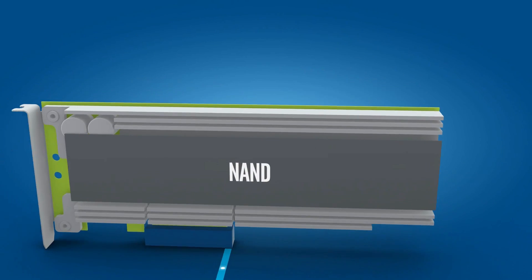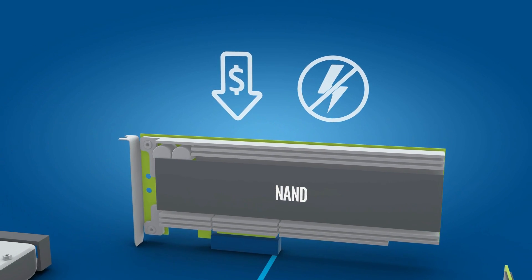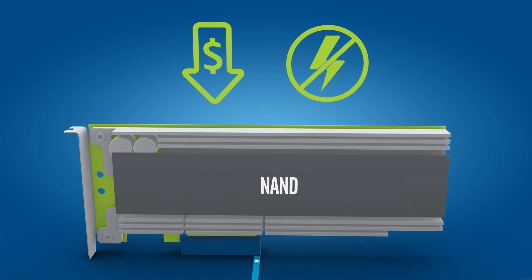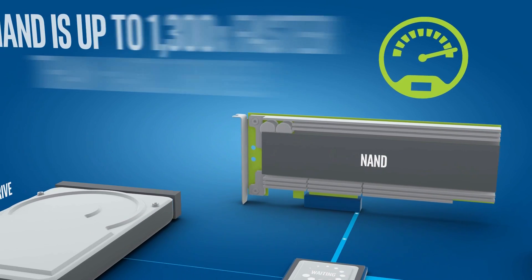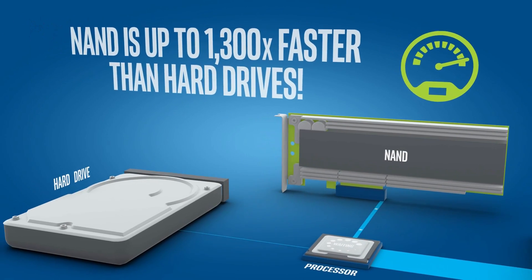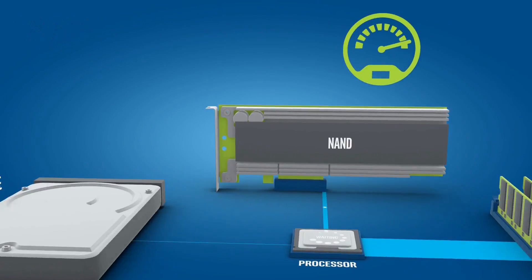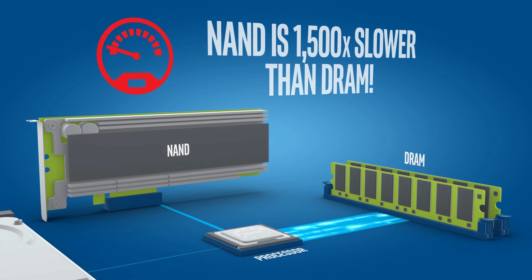On the other hand, NAND memory, found in today's SSDs, is both inexpensive and non-volatile. And while it's lightning fast compared to other storage technologies, up to 1300 times faster than hard drives, it's still about 1500 times slower than DRAM.